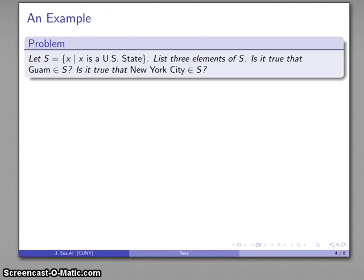For example, let's consider our set S. And let's see, this is things where the thing is a U.S. state. And here's a common thing you'll want to be able to do, list three elements of our set S. And then, well, is it true that Guam is an element of S? And how about New York City, an element of S? Well, let's take a look at that. So the elements of S are things that are U.S. states. And so let's think about this.